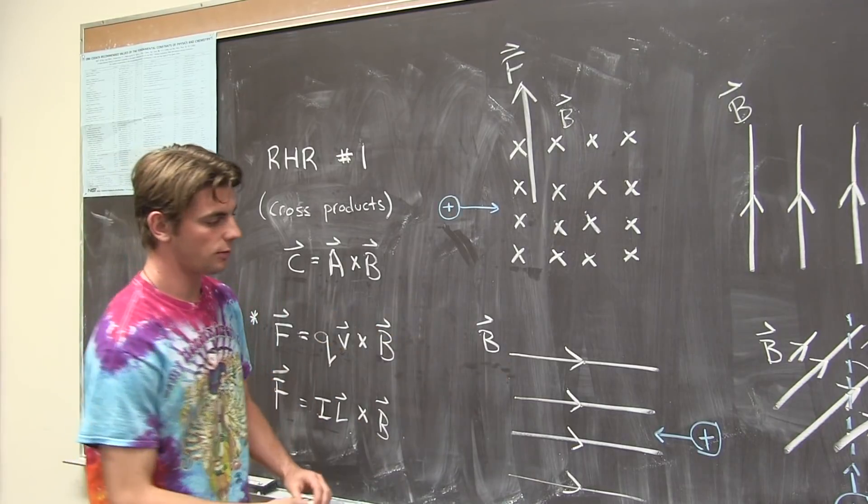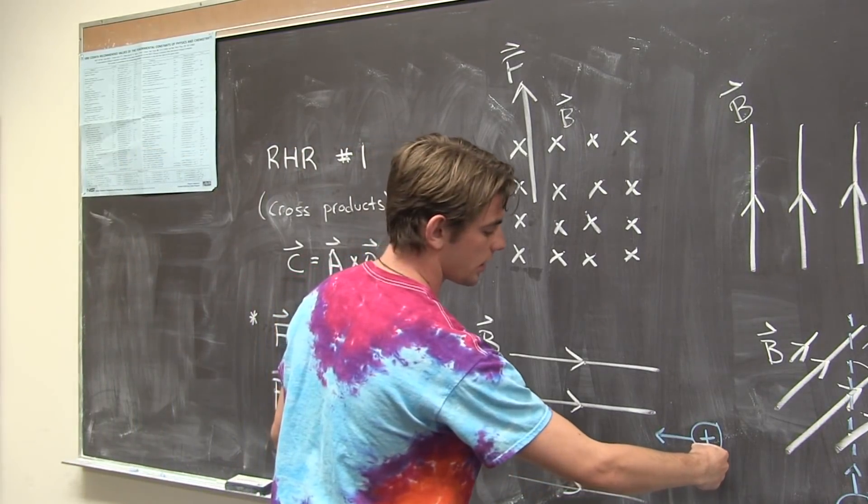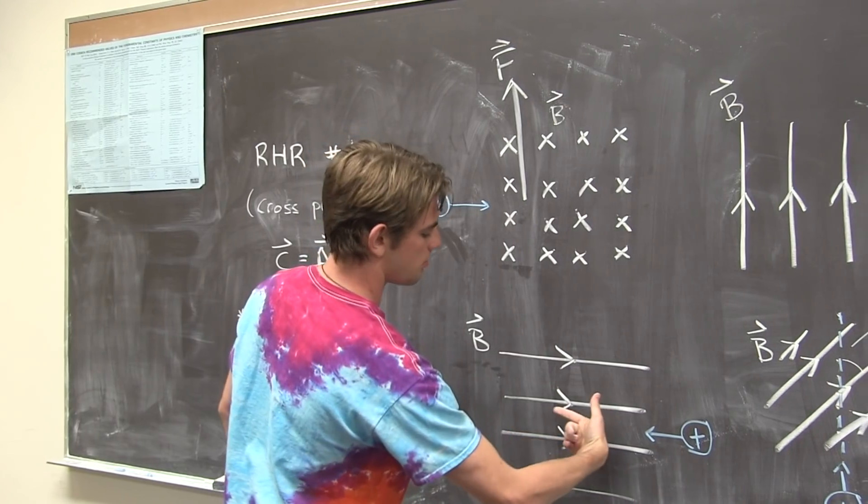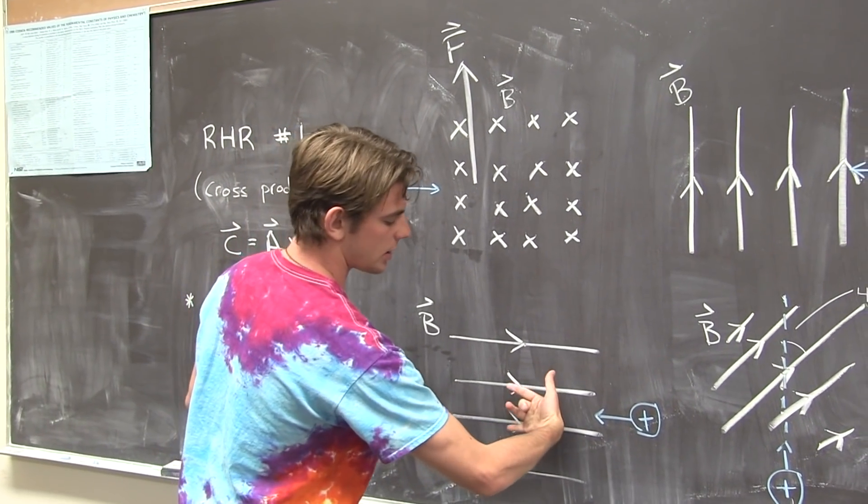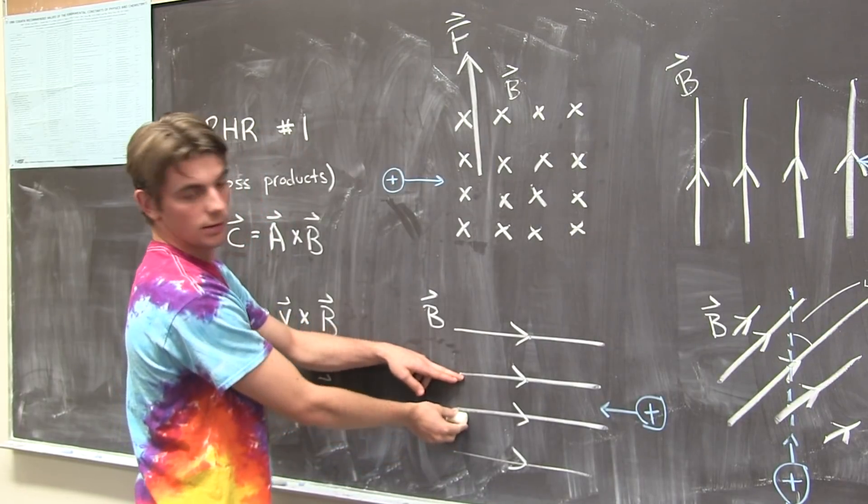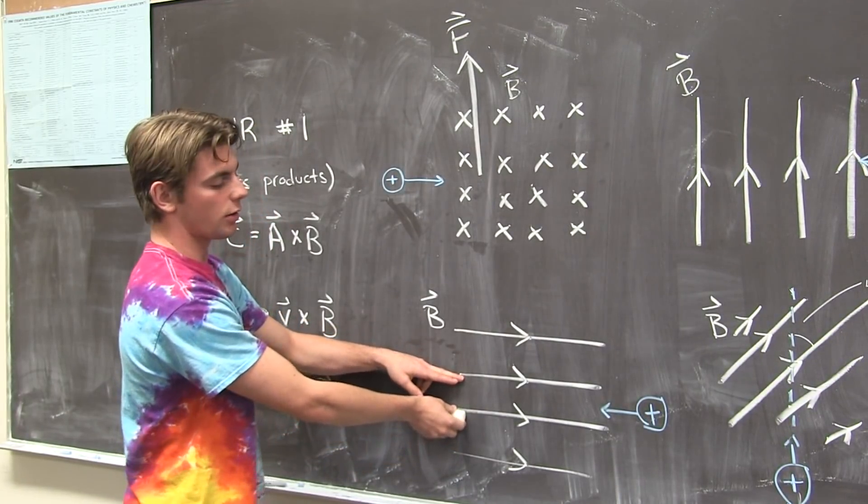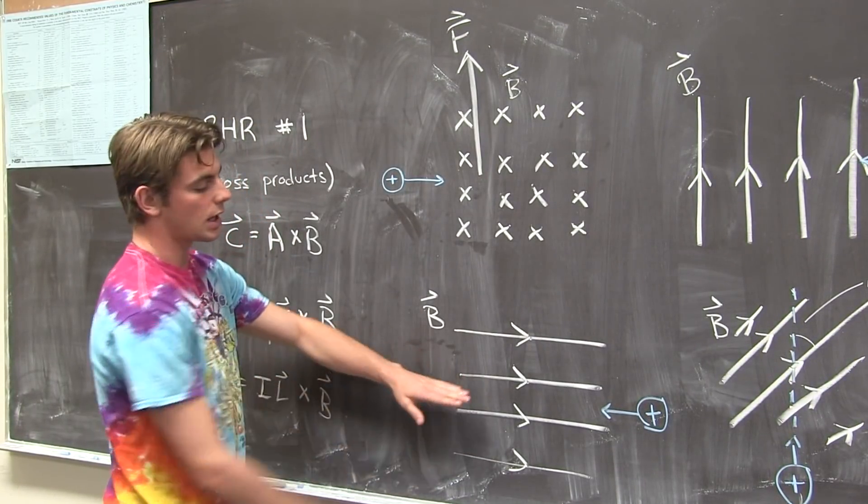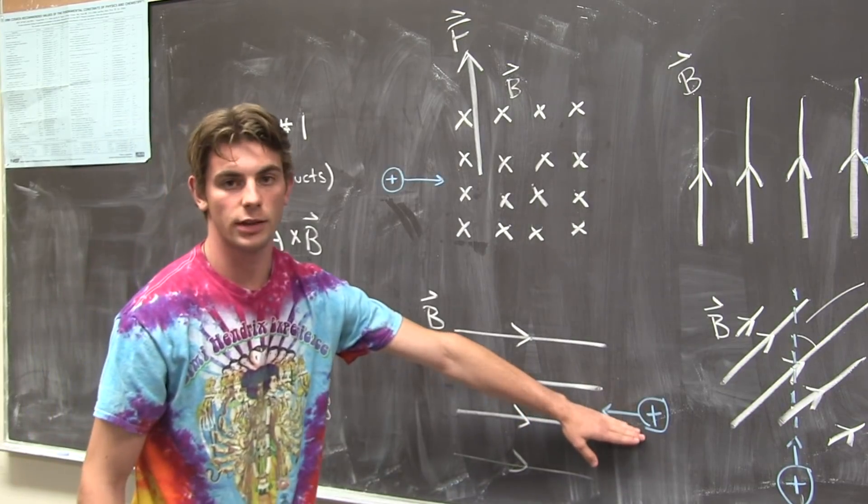For this one, we have our index finger going this way, but the magnetic field vector has no way to line up. So, these two vectors that are parallel are going to have a cross product equal to zero. There is going to be no force on this charged particle.